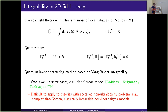In the first-principles quantization of a field theory, among other things, one needs to construct the Hilbert space as well as the quantum versions of these dynamical quantities. These would be operators given by an integral over a suitably regularized density built from the quantum field phi and its partial derivatives. The condition that they are conserved with time is just the fact that they commute with the Hamiltonian.